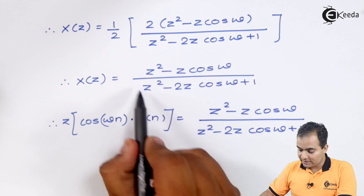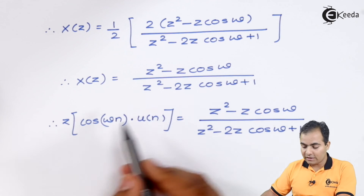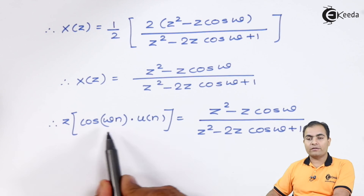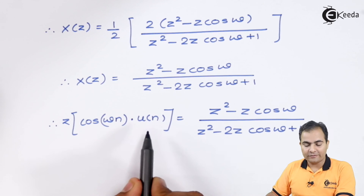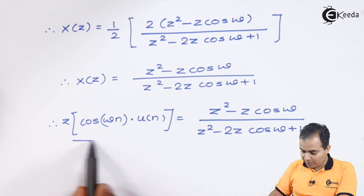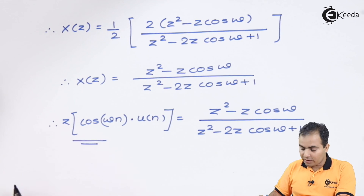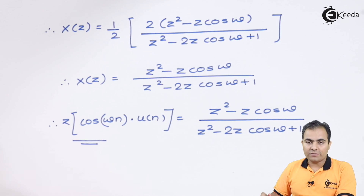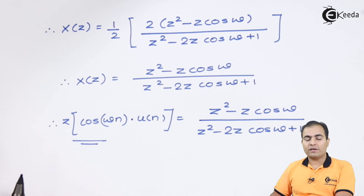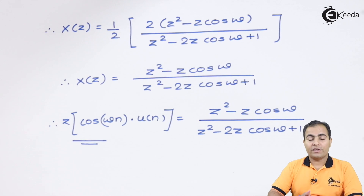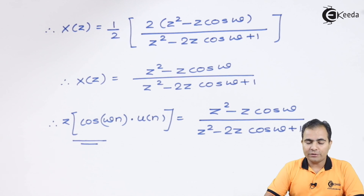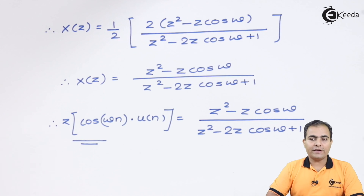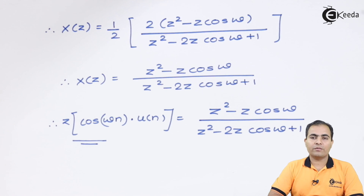This is the result of the Z-transform of cos(ωn)·u(n). Remember this formula because it is important from both the Z-transform and inverse Z-transform point of view. Thank you for watching — stay tuned with Ikeda and subscribe for further videos.